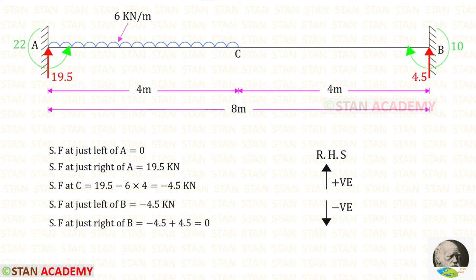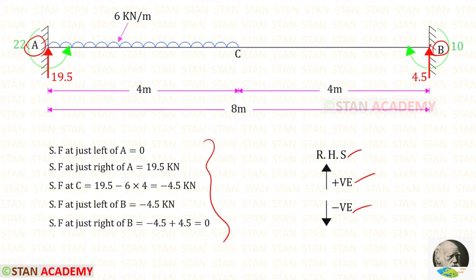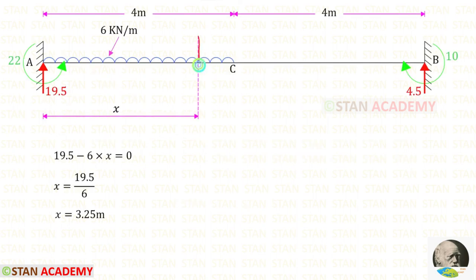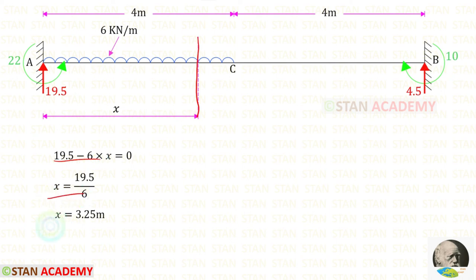Now we can draw the shear force diagram. I am going to find the shear force values from point A towards point B, following the right hand side rule: upwards positive, downwards negative. Using this rule I have calculated the shear force values. In the shear force diagram, there is a point where the shear force becomes zero. At this point there will be the maximum positive bending moment. Making a section at distance x from point A and using the zero shear condition, x = 3.25 meters.